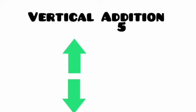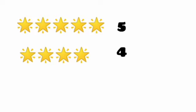Let's add five and four vertically. Write five on the top and four below it. Draw five stars to represent number five, then draw four stars to represent number four. Now count the total number of stars. Yes, nine stars. So five plus four is equal to nine.